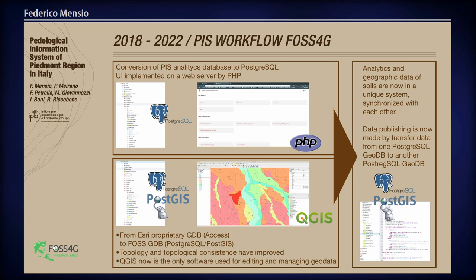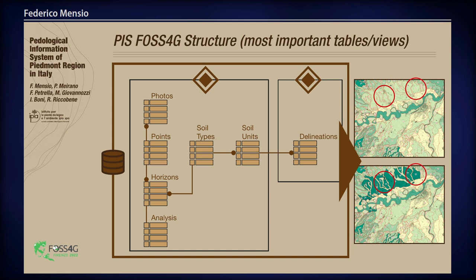Most importantly, data publishing is now made as a transfer from one PostgreSQL geodatabase to another PostgreSQL geodatabase. A quick look at the structure: it's a very simple structure. Only one database, two schemas — one schema for the analytics data on the left, and one schema with only one table and many views on the right.